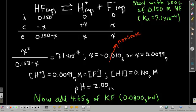Now, here's the new part. Let's add some potassium fluoride to this solution that's already at equilibrium. Let's say we add 4.65 grams of potassium fluoride, which ends up being about 0.08 moles. And because it's one liter of solution, that means the concentration we've added is 0.08 molar. So what's going to happen?